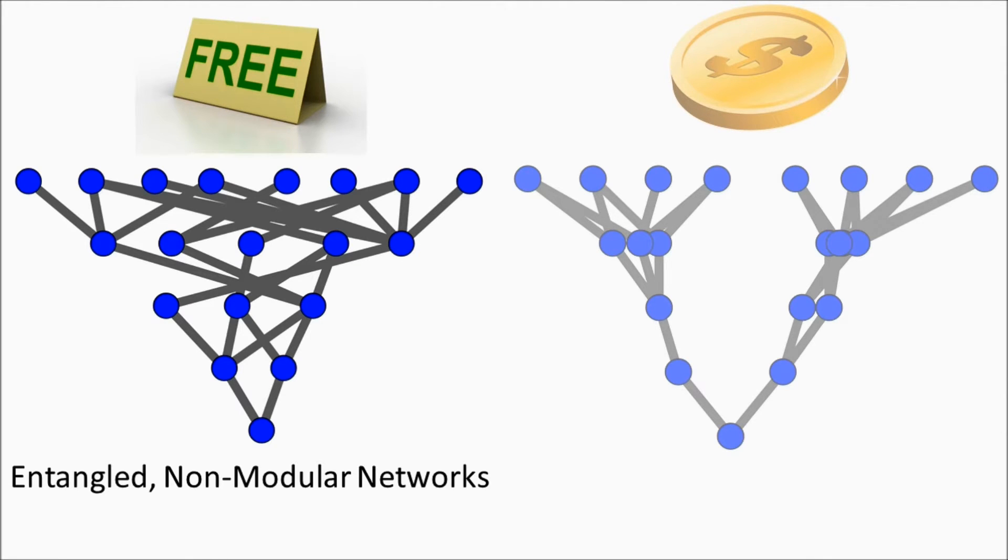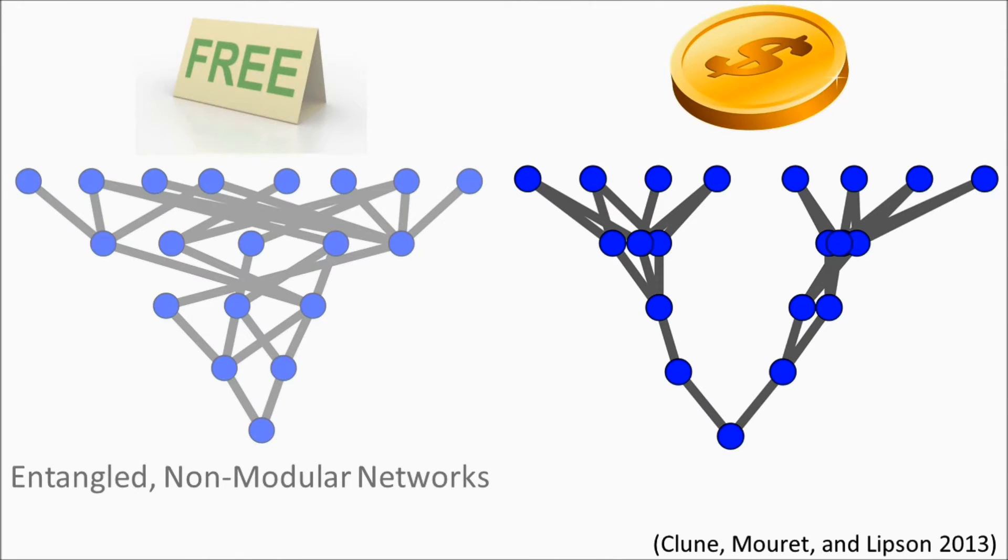However, a recent experiment demonstrated that when adding a cost of connections to the evolutionary process, evolution tends to reduce the number of connections, resulting in more modular networks.